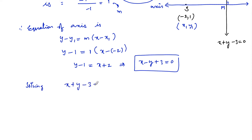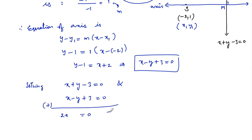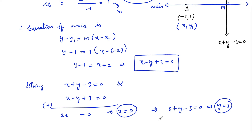Solving the two equations x + y - 3 = 0 and x - y + 3 = 0 simultaneously: adding both gives 2x = 0, so x = 0. Substituting x = 0 into x + y - 3 = 0 gives y = 3. So the coordinates of point M are (0, 3).